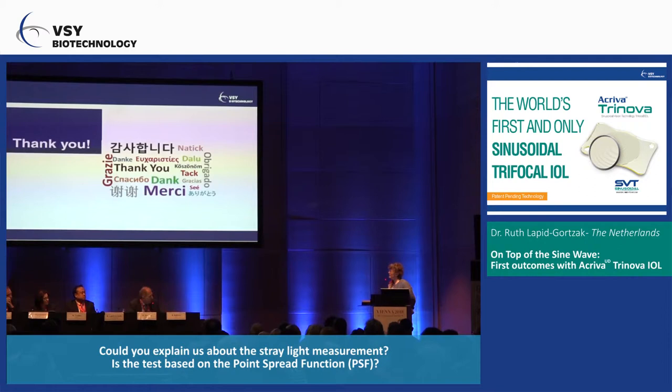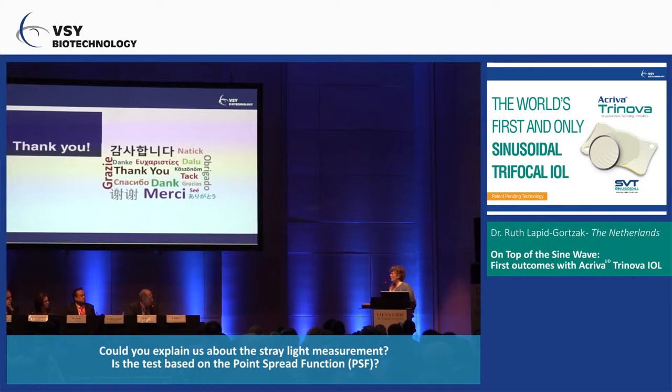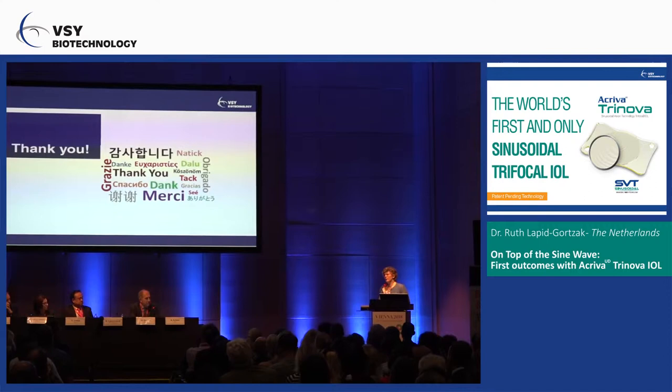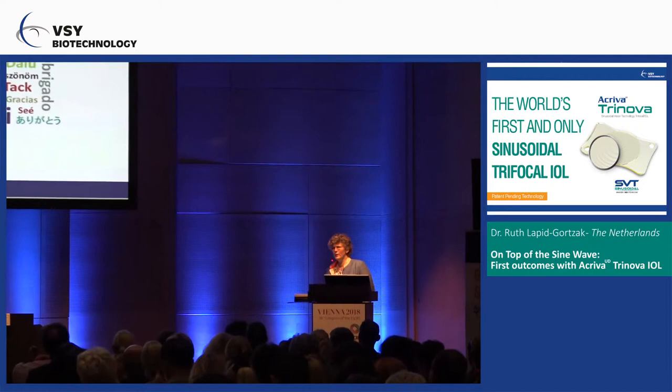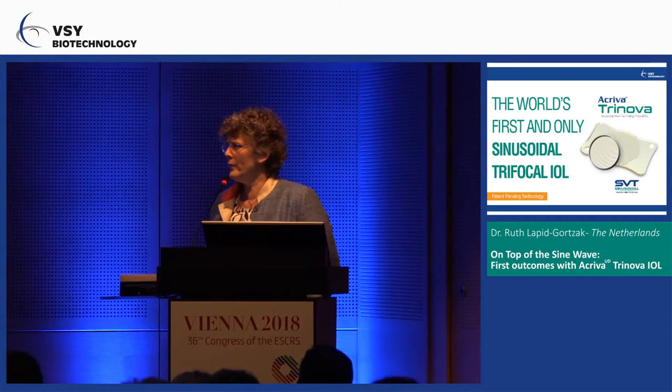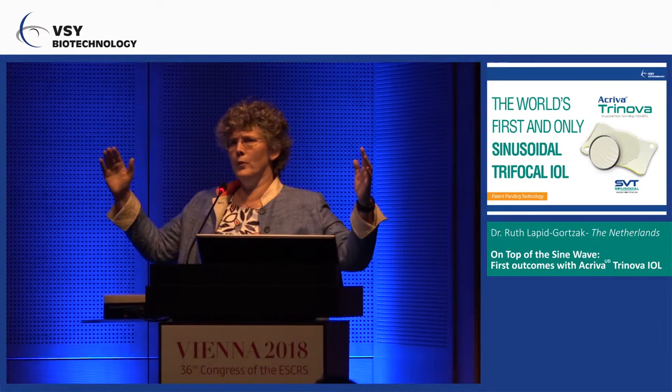Could you explain a little bit about the stray light measurement? Is this testing of point spread function? The tip of the point spread function is basically our visual acuity. It's 0.1 degree from it, and this is where you will find all the higher order aberrations and the lower order aberrations.